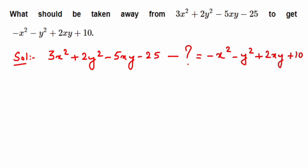The question mark here is an unknown expression. What expression should we subtract to get the right-hand side? This is unknown to us, so I'm going to assume a variable. Since x and y are already taken, I'll use a capital letter P to represent the entire expression, just to avoid confusion. So P is the expression which should be subtracted from the first expression to get the second one.